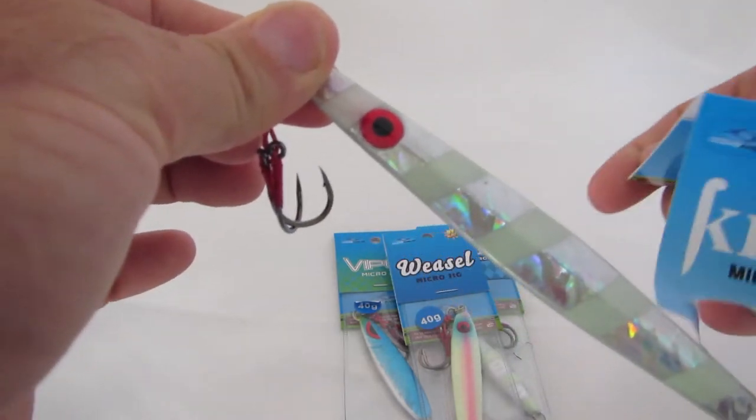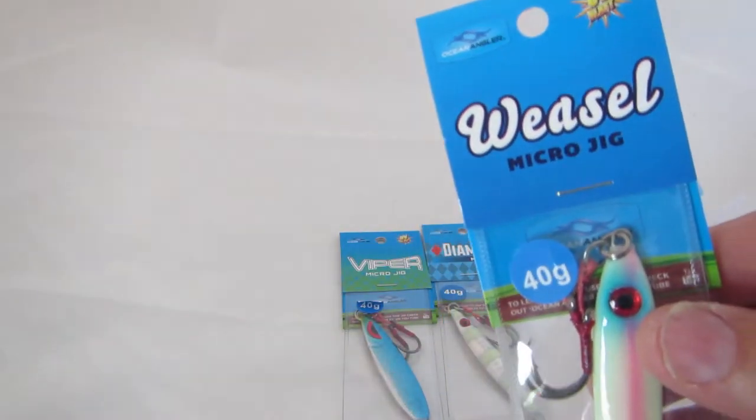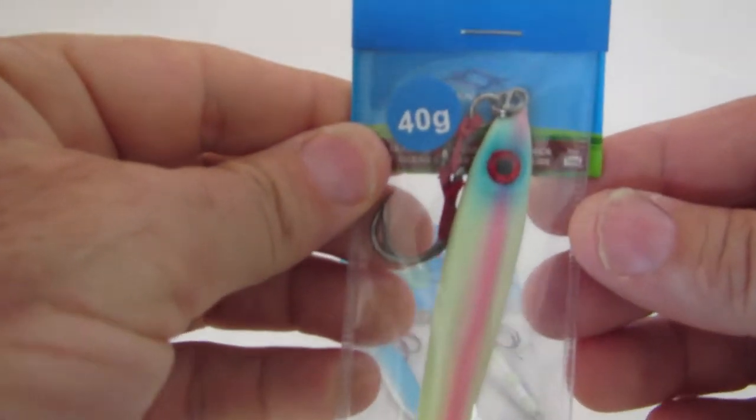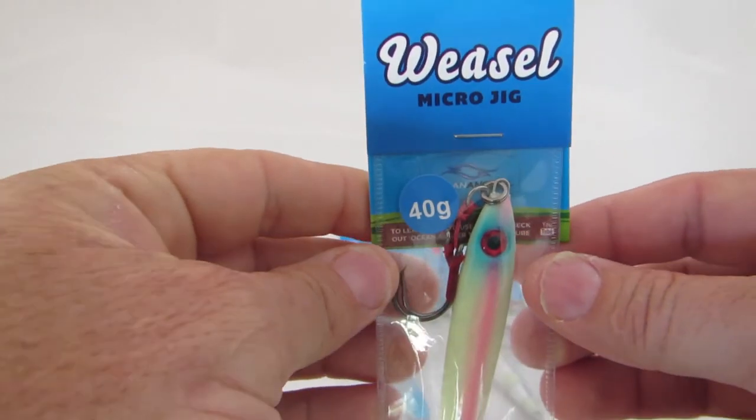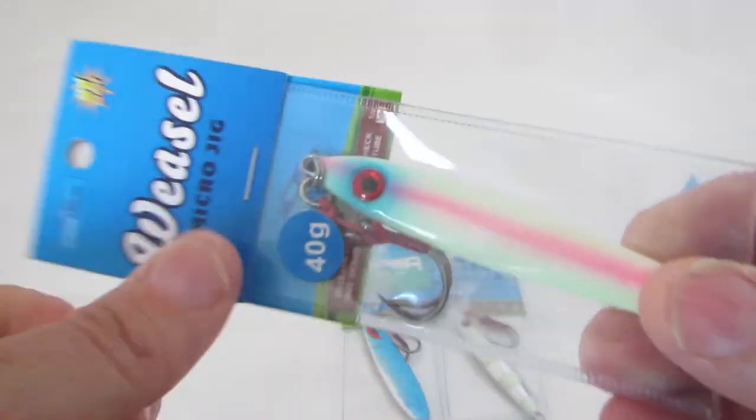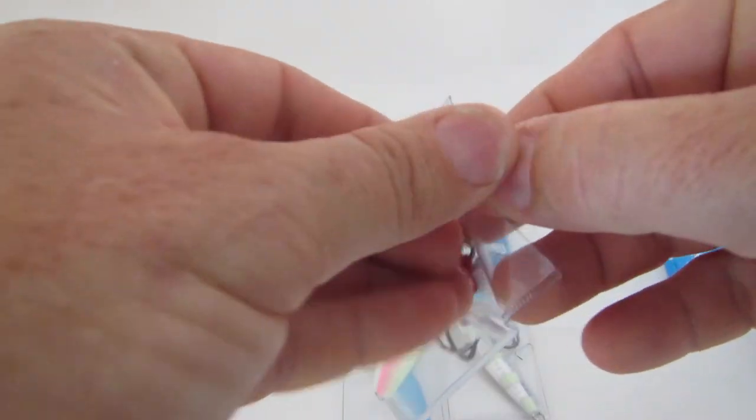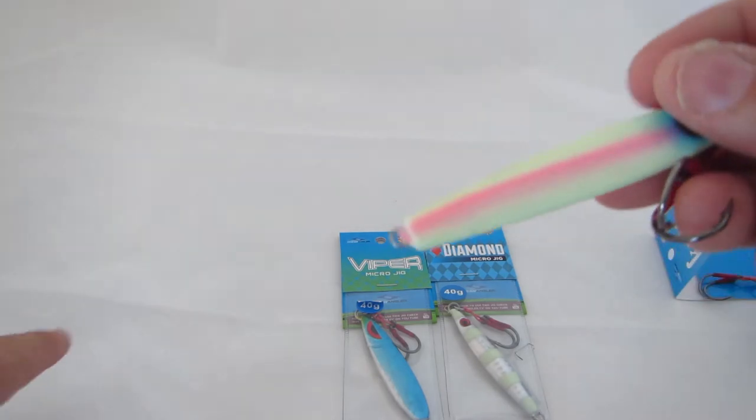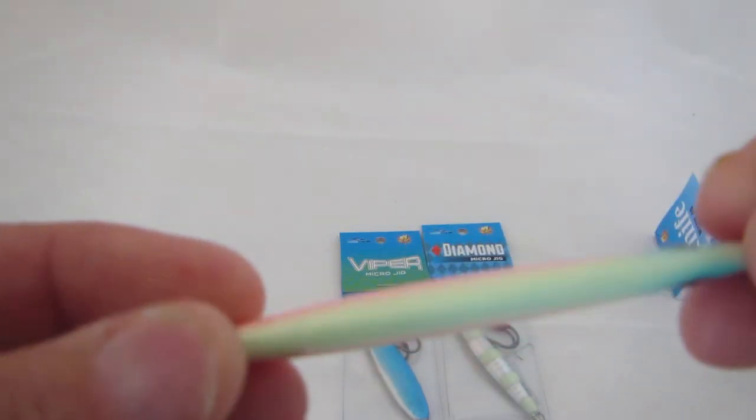Now let's have a look at the weasel. This is a different shape. Once again, this is 40 grams. Let's take this one out and have a look. Now this color here is a very popular color overseas. When we were researching what colors to do, this color kept on popping up time and time again, so we use the same color ourselves.